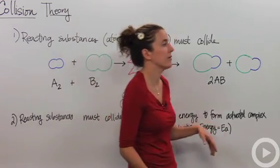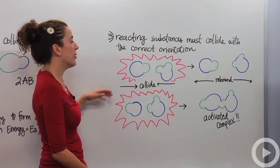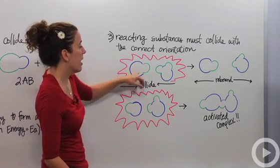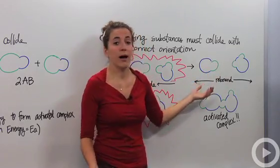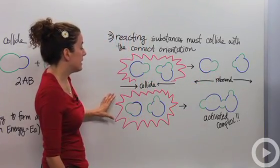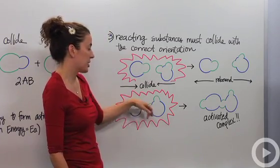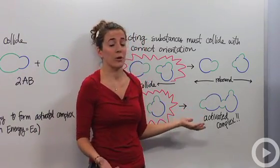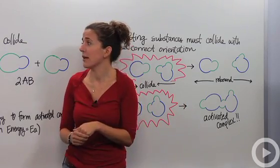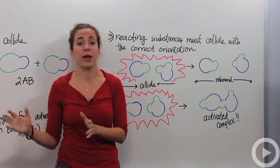And the last thing in the collision theory is that reacting substances must collide with the correct orientation. So if they had made a collision in an orientation that wasn't great for them, they would actually rebound off each other and not react at all. But if they did, they have to make sure they line up correctly for the correct reaction site to occur. And then they get their activated complex, and then the reactants form the products. So these three things are the basis of the collision theory and how reactants go from reactants to the products.